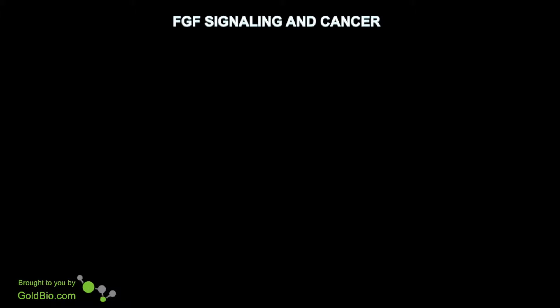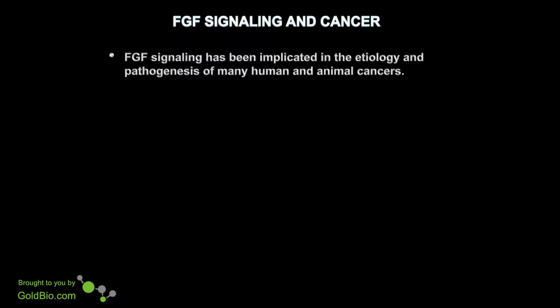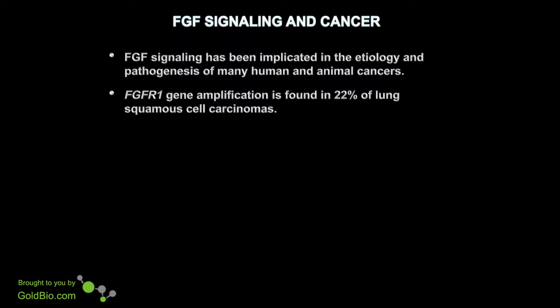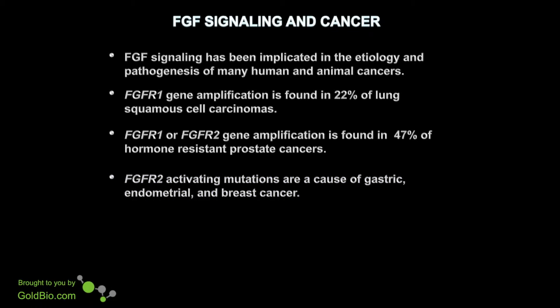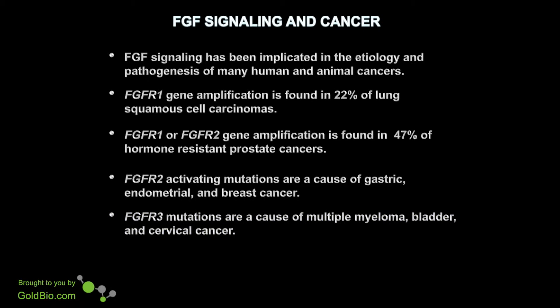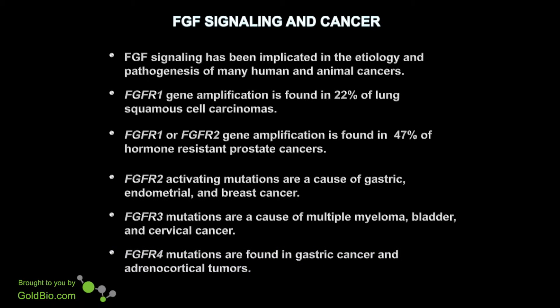FGF signaling has been implicated in the etiology and pathogenesis of many human and animal cancers. FGF receptor 1 gene amplification is found in 22% of lung squamous cell carcinomas. FGF receptor 1 or FGF receptor 2 gene amplification is found in 47% of hormone-resistant prostate cancers. FGF receptor 2 activating mutations are a cause of gastric, endometrial, and breast cancer. FGF receptor 3 mutations are a cause of multiple myeloma, bladder, and cervical cancer. And FGF receptor 4 mutations are found in gastric cancer and adrenocortical tumors.